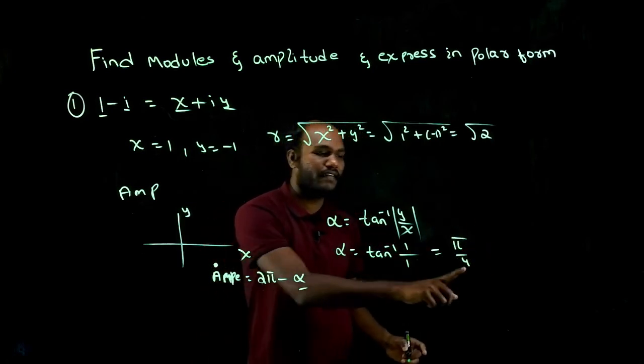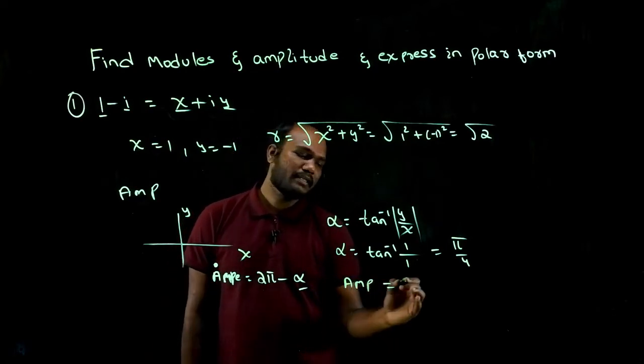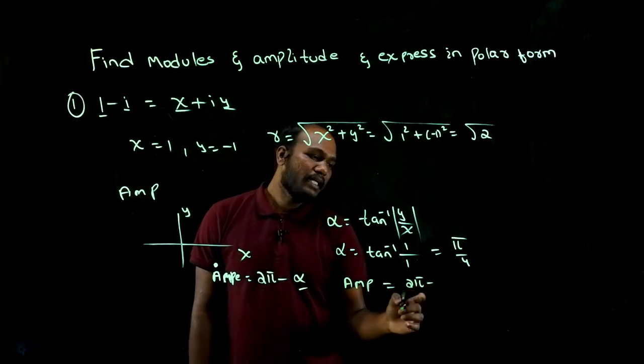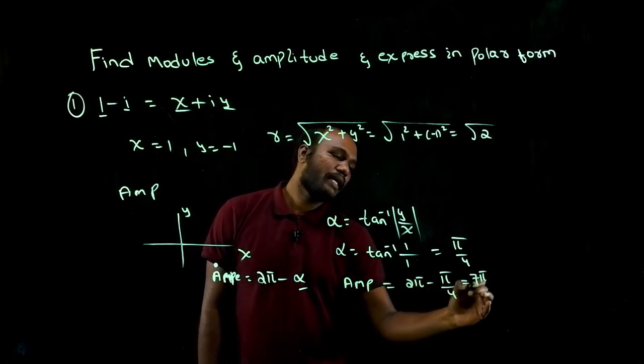This is the α value. So what will be the amplitude? Amplitude equals 2π minus α, that is 2π minus π upon 4. This will become 7π upon 4.